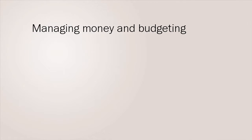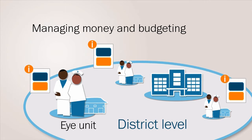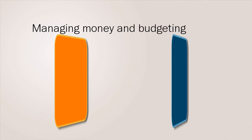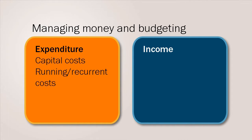Managing money and budgeting: eye care programs are integrated into district health services. Planners and managers need to present a budget for their programs to those who allocate funds, whether government or external donors. Budgets list expenditure — outgoings or costs — and income. Under expenditure, budgets include capital and running costs. Capital costs are one-time costs; they include items such as buildings, vehicles and equipment. Running or recurrent costs include items such as salaries, consumables and overheads. It is important that all costs and expenditures are included in a budget; if the exact amount is unknown, an estimate should be used. A five to ten percent contingency budget can also be added.